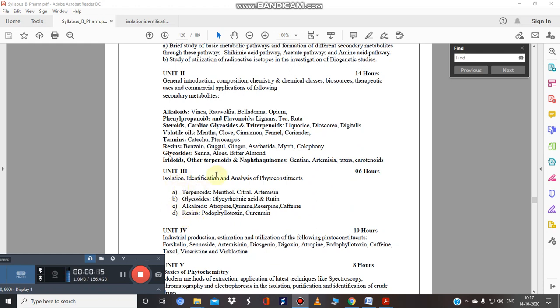We completed menthol, citral, and artemisone, and in the glycoside categories we completed glycyrrhizic acid or glycyrrhizin and rutin. In this category of resin we have two phytoconstituents to analyze, identify, and isolate.